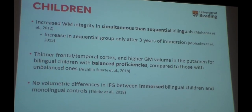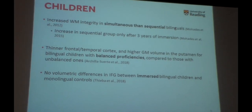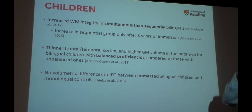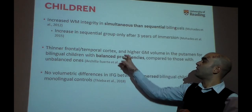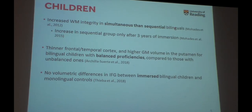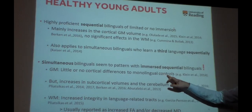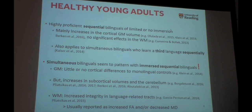Other researchers, like Archela Suerte, found thinner frontal and temporal cortex and higher gray matter volume in the putamen — that's subcortical — in bilingual children with balanced proficiency in the two languages when compared to those with unbalanced ones. Another study found no volumetric differences in the inferior frontal gyrus between immersed bilingual children and monolingual controls. This goes back to what we found for immersed bilinguals: no gray matter effects, even in children.